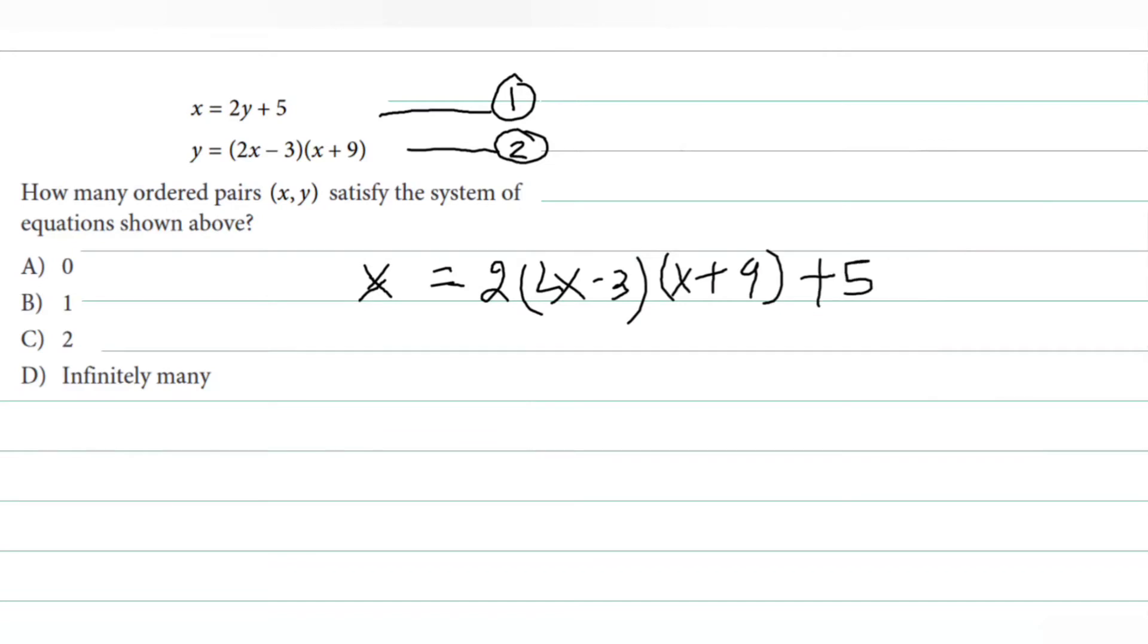Now if I start simplifying this, let's simplify. When we expand and simplify, this becomes 4x² plus 30x minus 49.